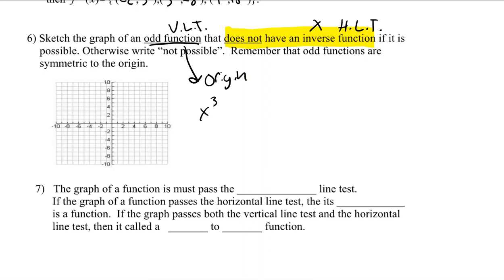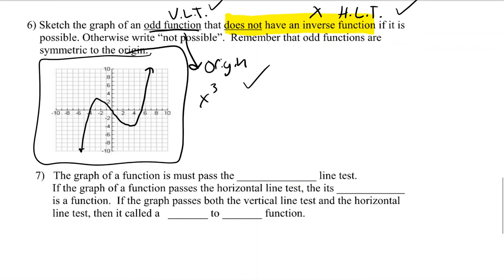One possibility is you could do something like this. This is still a function - it passes the vertical line test. It's odd because it's symmetric to the origin, roughly. My sketch isn't the best, but it no longer passes the horizontal line test, so this is one possible answer. It meets the requirements and still makes it fail the horizontal line test like they asked. So that one you have to be a little creative on. Just don't give up too quick.